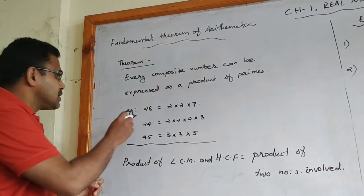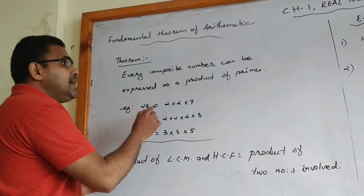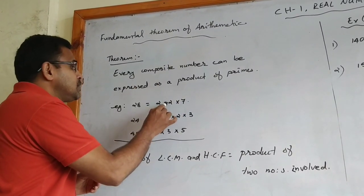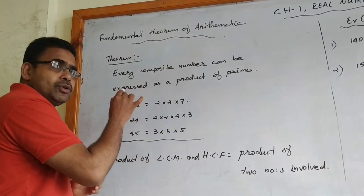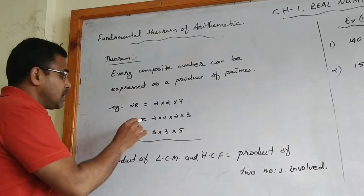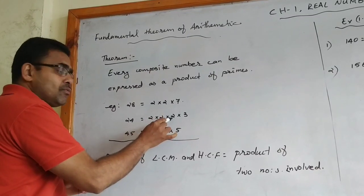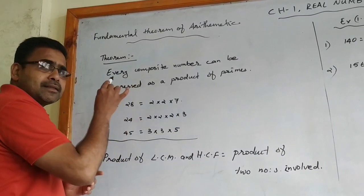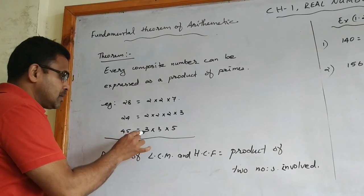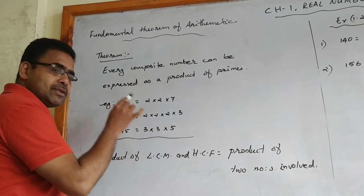I will show some examples. See here 28: we can factorize 28 into 2 × 2 × 7. Two twos are 4, and 4 × 7 = 28. Next example: 24 = 2 × 2 × 2 × 3. Two twos are 4, four twos are 8, and 8 × 3 = 24. Now 45 = 3 × 3 × 5. Three threes are 9, and 9 × 5 = 45.